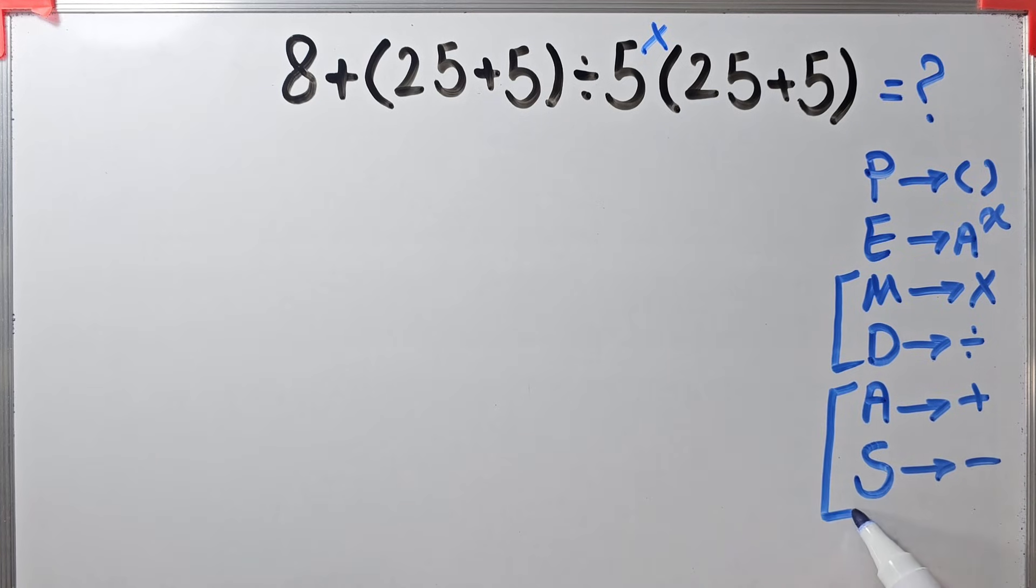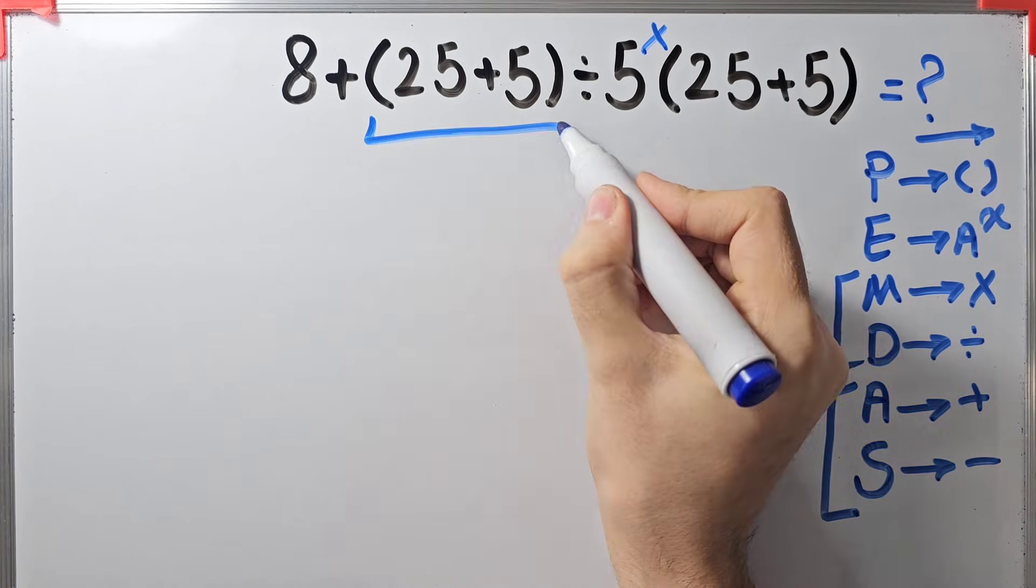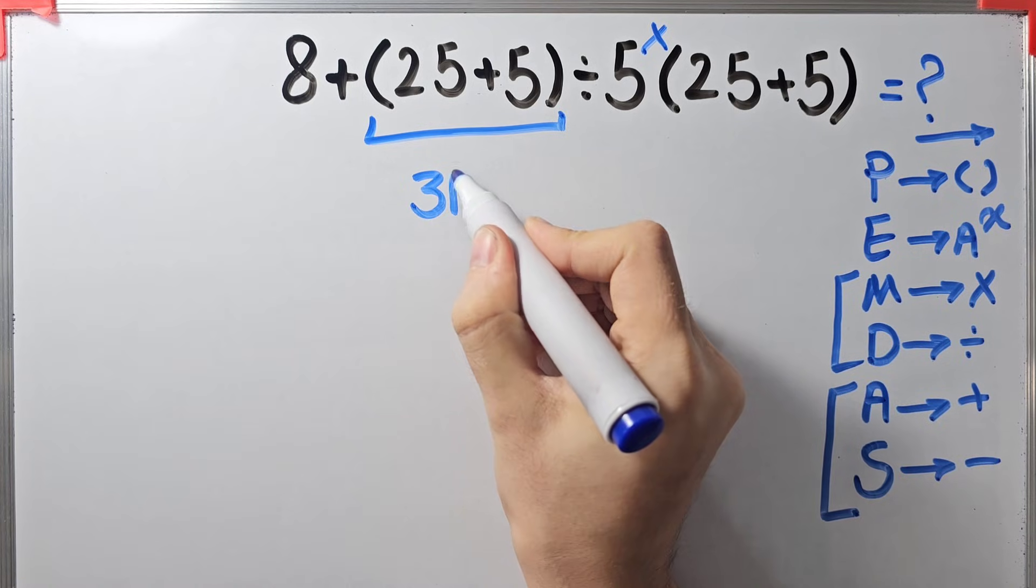When we have both in an expression, we start from the left and simplify. According to the PEMDAS rule, first we simplify these parentheses. 25 plus 5 equals 30. Now we have 8 plus 30 divided by 5, then times open parenthesis 25 plus 5 closed parenthesis.